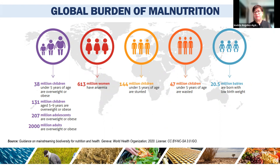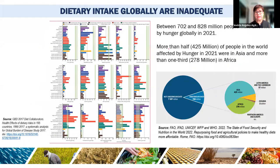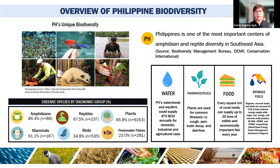20.5 million babies are born with low birth weight. Between 702 and 828 million people were affected by hunger globally in 2021. More than half of people affected by hunger in 2021 were located in Asia, and more than one third were in Africa.